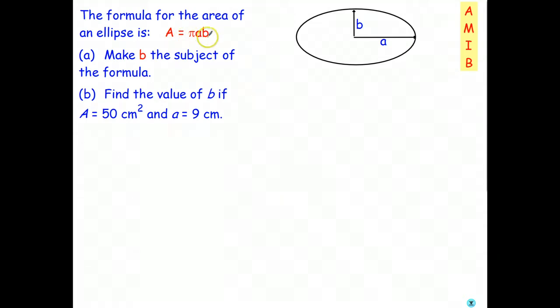Our job is to make B the subject. And once we've done that, to find the value of B for these values of area and small a. Let's go ahead and start by writing down the formula. A equals pi times A times B. So the only operation we have in here is multiply. And the inverse of multiplying is dividing.